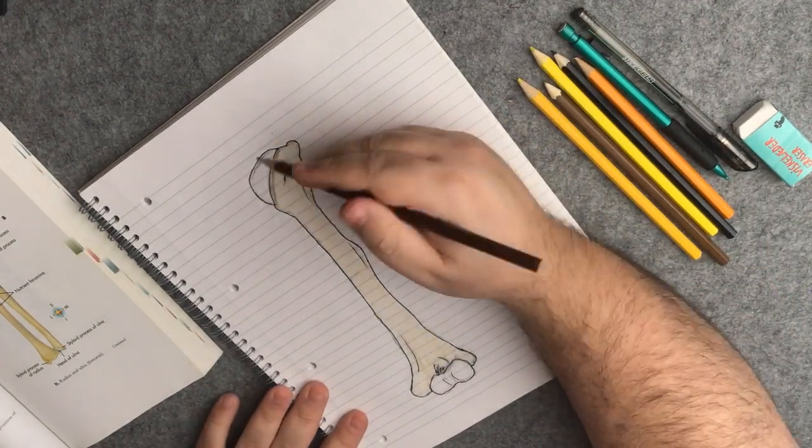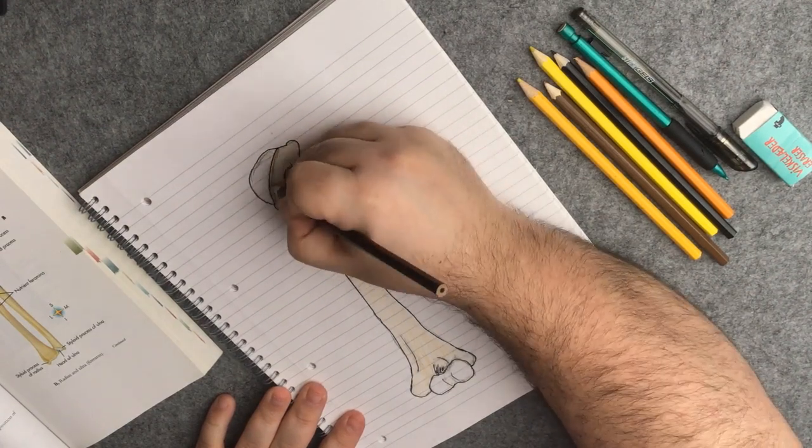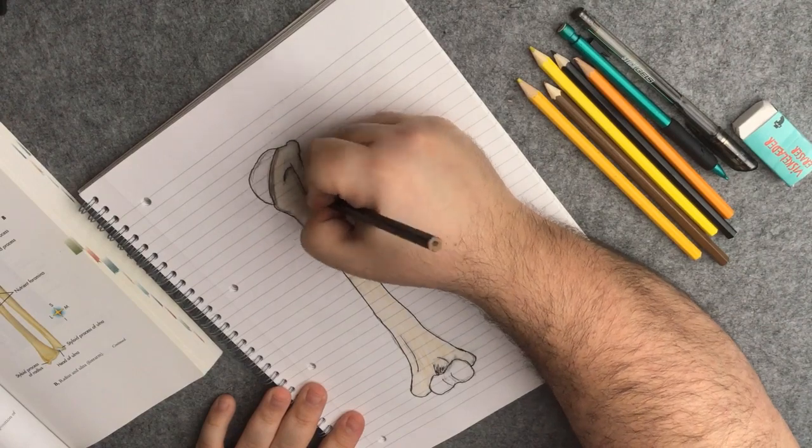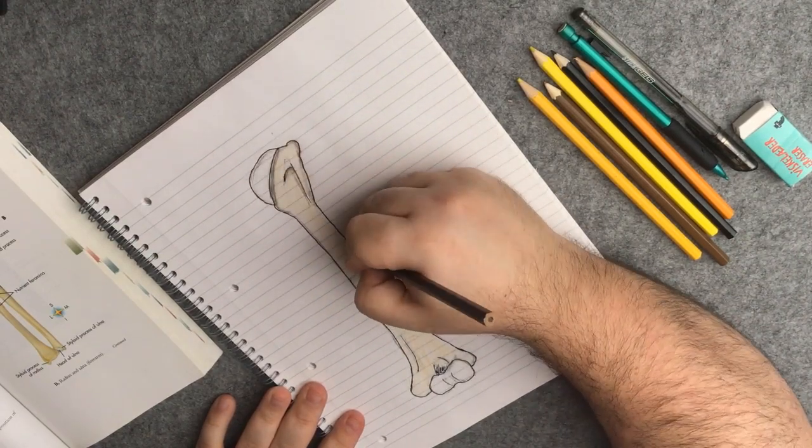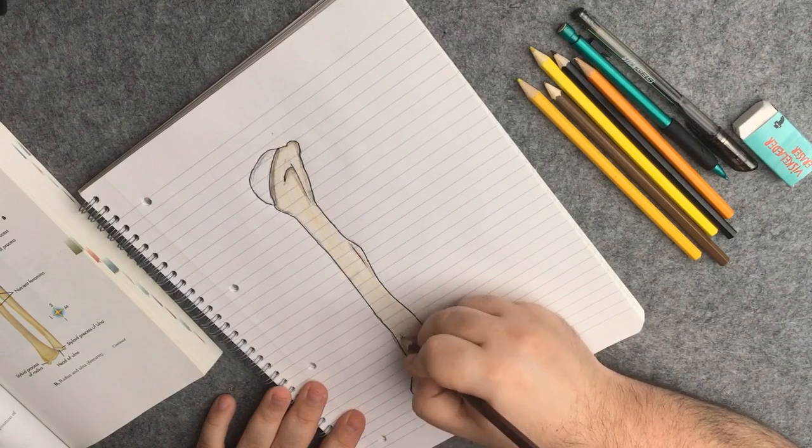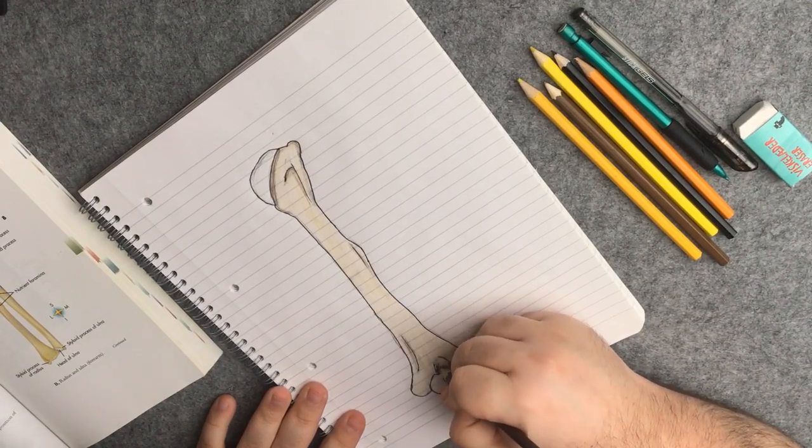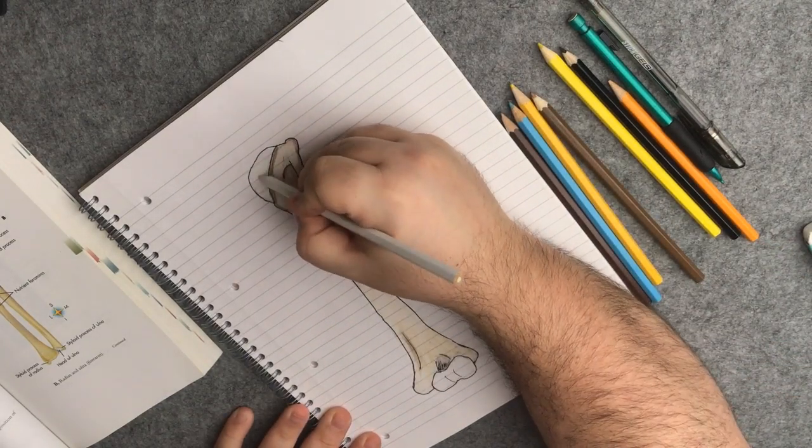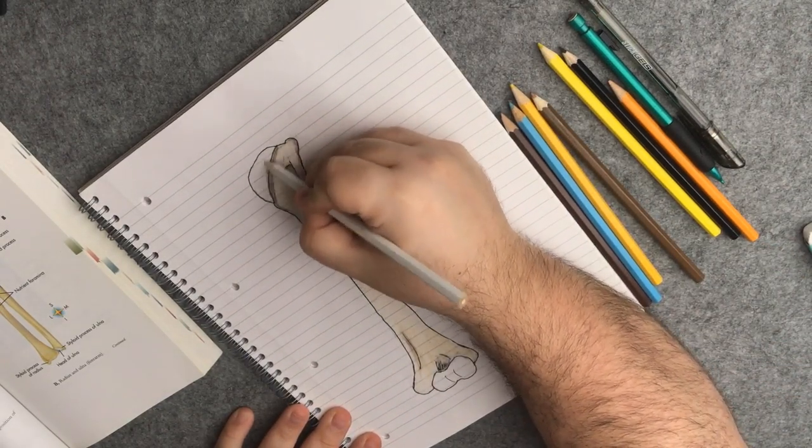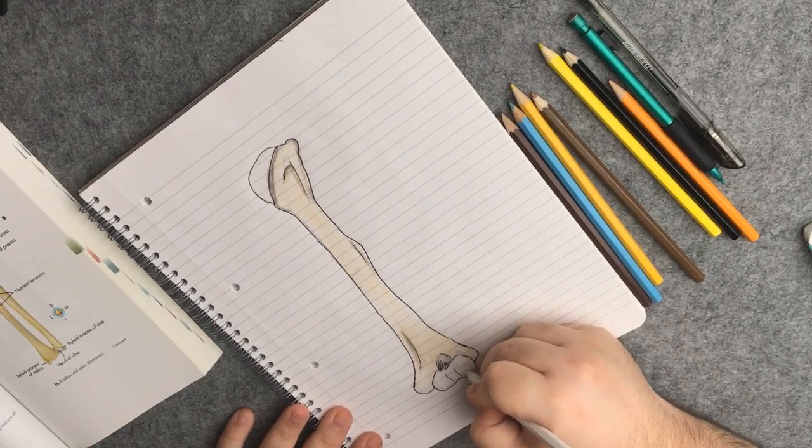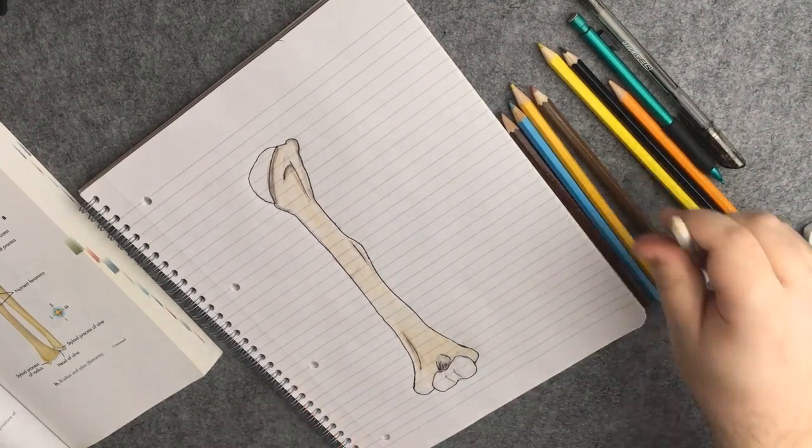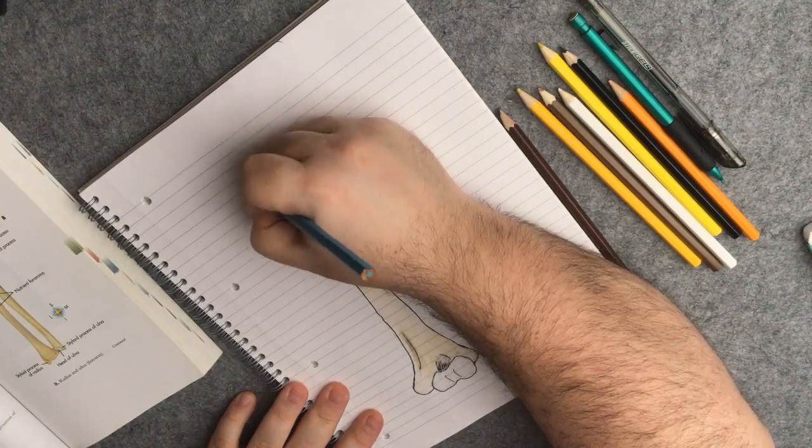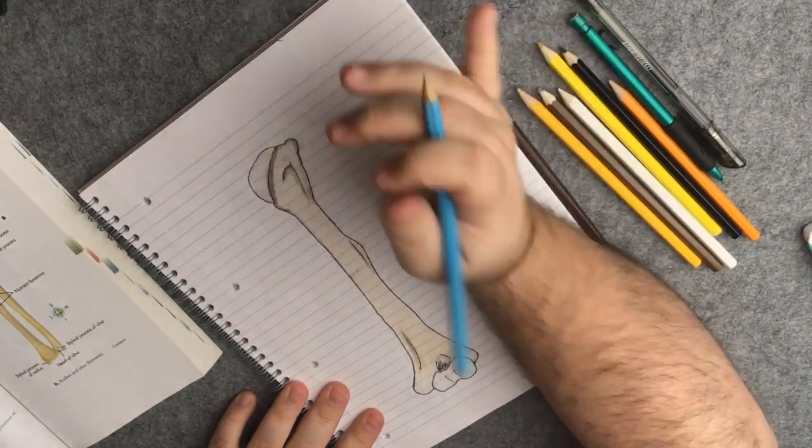Then I go in with a darker brown to highlight some of the landmarks and add a bit more contour and depth to this bone. For the articular cartilaginous surfaces I use a white pencil first, which in hindsight was not the best idea. Because then I try to add a bit of blue and it does not pick up as I wish it would. Maybe it has to do with the fact that these pencils are a bit crappy.